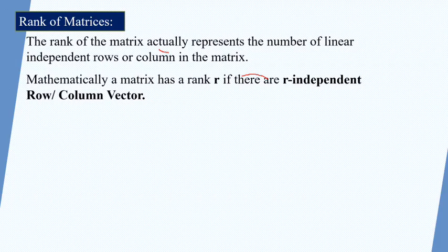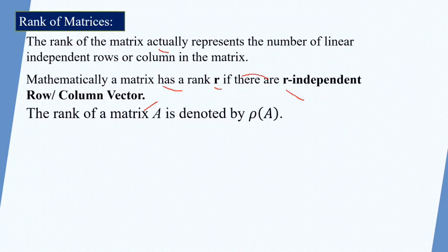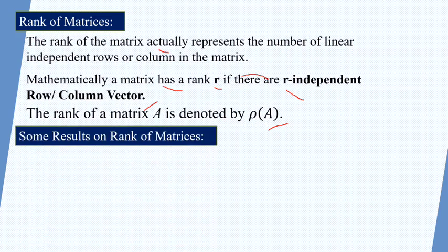Mathematically, a matrix has rank r if there are r independent row or column vectors. The rank of a matrix is denoted by rho A. Now let's look at some standard results on rank of matrices.